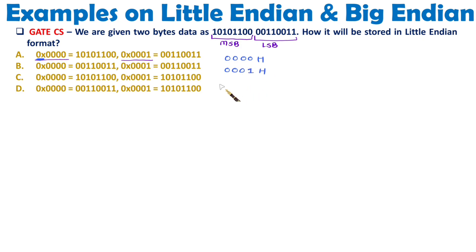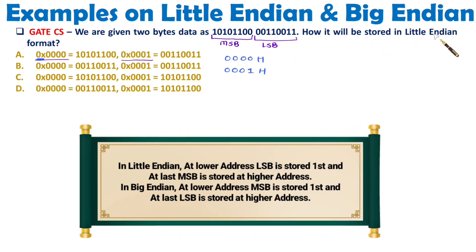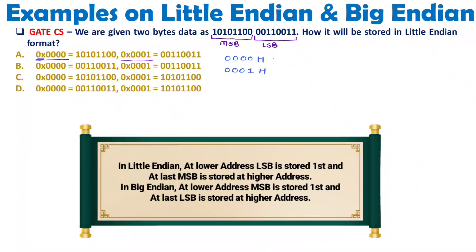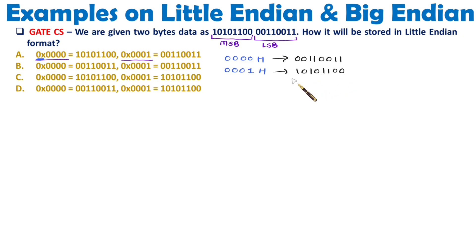So those are the two addresses. Now in little-endian, we need to store this data. Remember in little-endian, at a lower address we store the lower byte, and at a higher address we store the higher byte. So at the lower address, we will be storing the lower byte, which is 00110011. And at the higher address, we will be storing the higher byte, which is 10101100. That is how you store data in little-endian format.